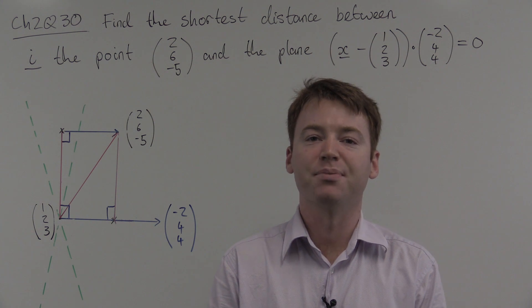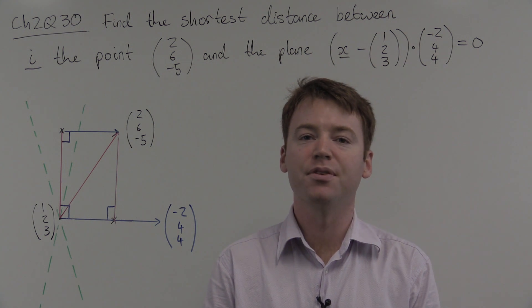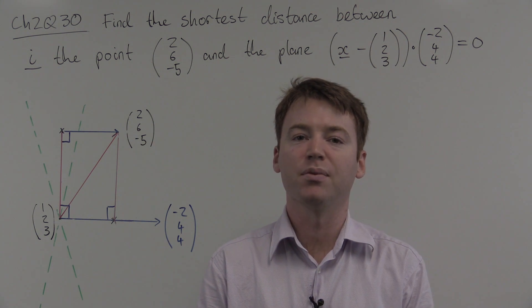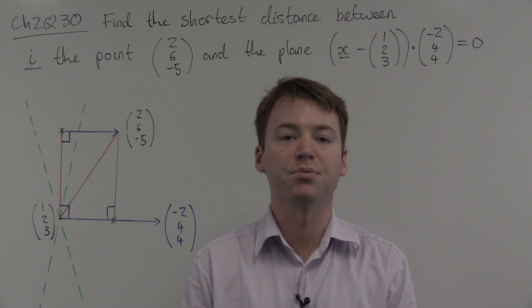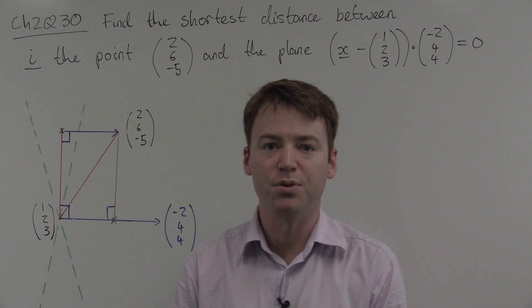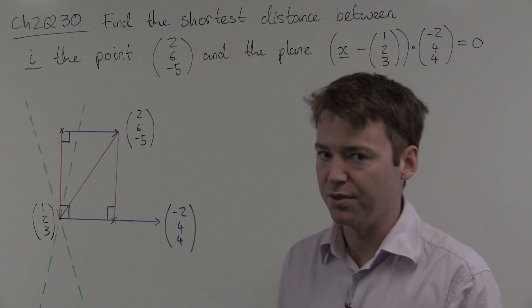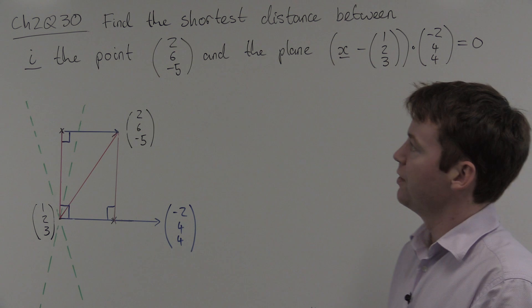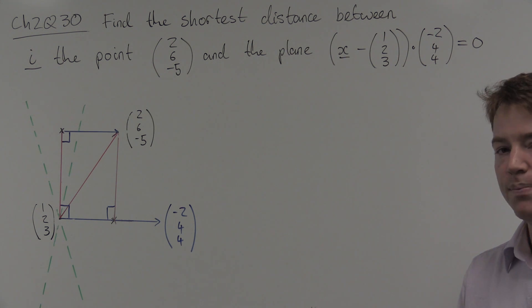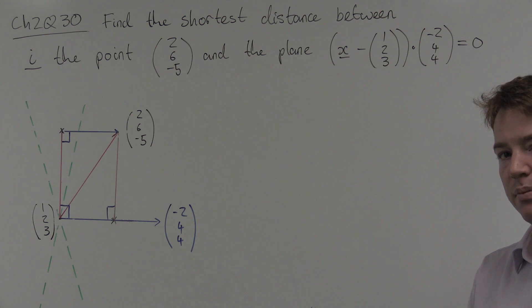Hello, my name is Daniel Mansfield. Welcome to the University of New South Wales Math 1131 Algebra course. In this video we do chapter 2 question 30: find the shortest distance between a point and the plane.